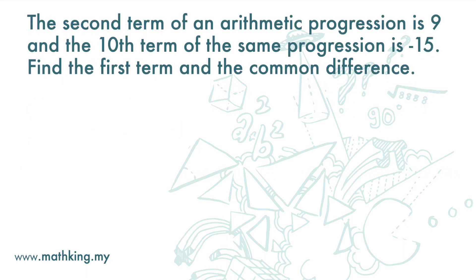The second term of an arithmetic progression is 9, and the tenth term of the same progression is negative 15. Find the first term and the common difference.